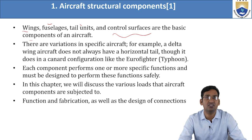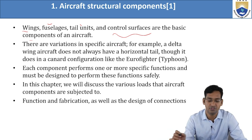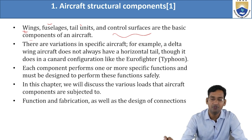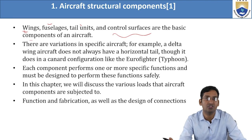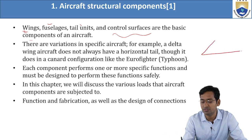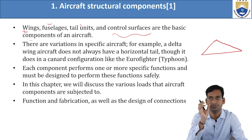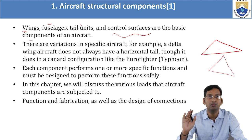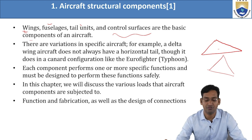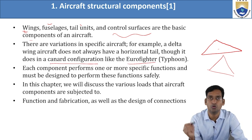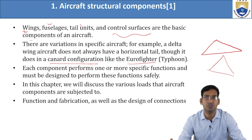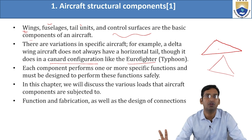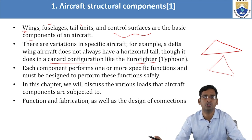There are variations in specific aircraft. For example, a delta wing aircraft has a wing but the shape changes to a delta or triangular type. Delta wing aircraft does not always have a horizontal tail — it can be vertical or at some particular angle, as in a canard configuration like the Eurofighter Typhoon. According to the configuration, the aircraft name and purpose also change.